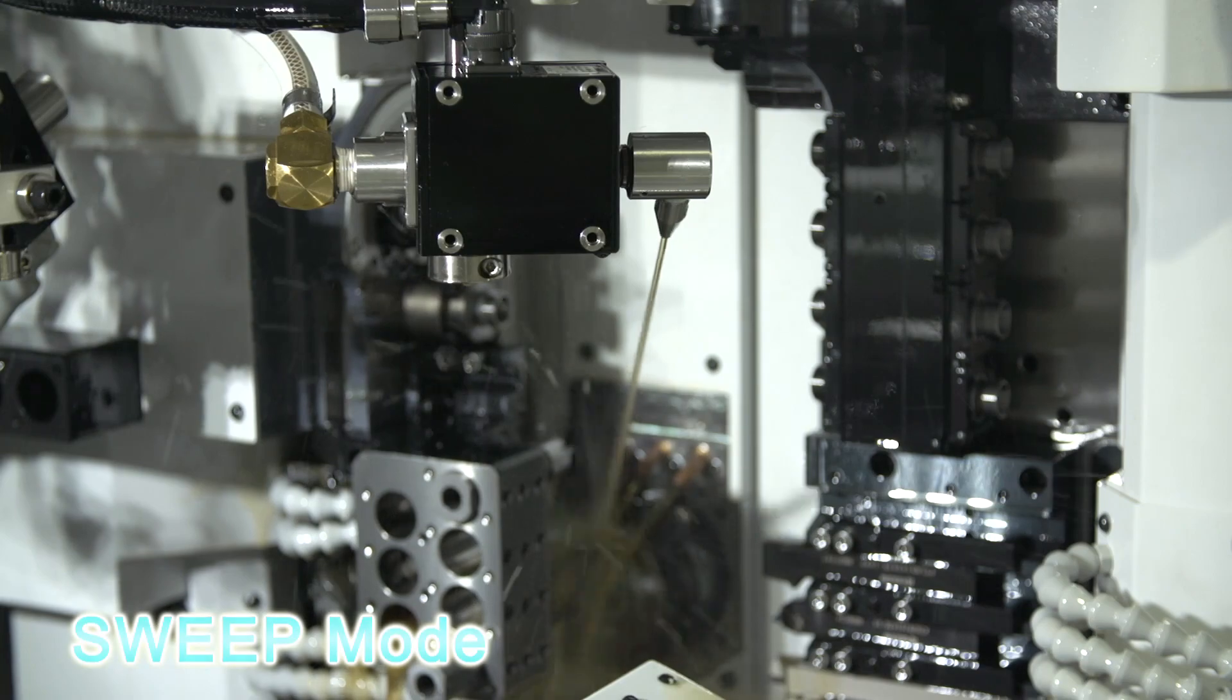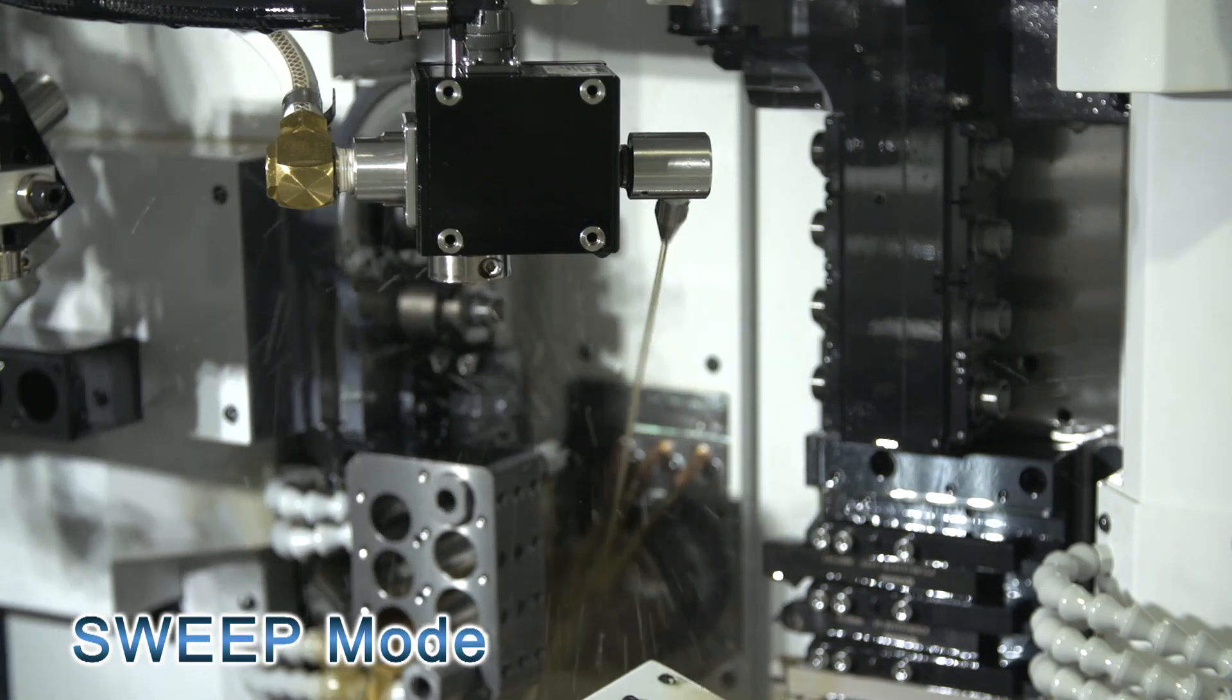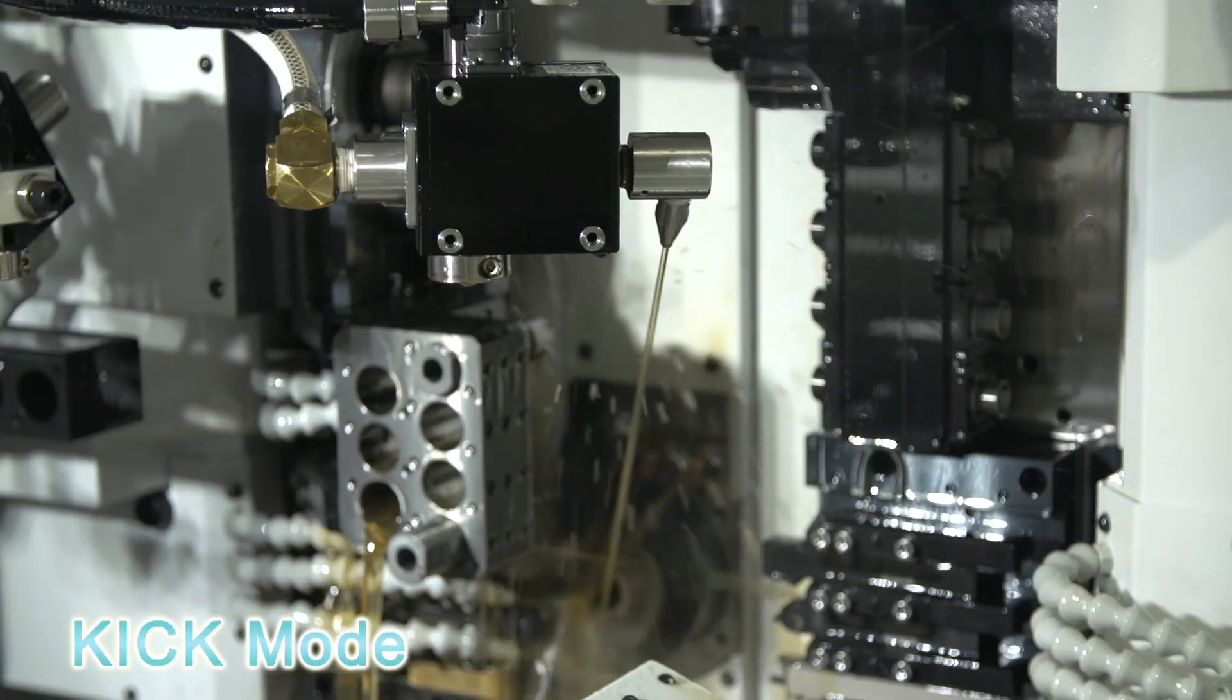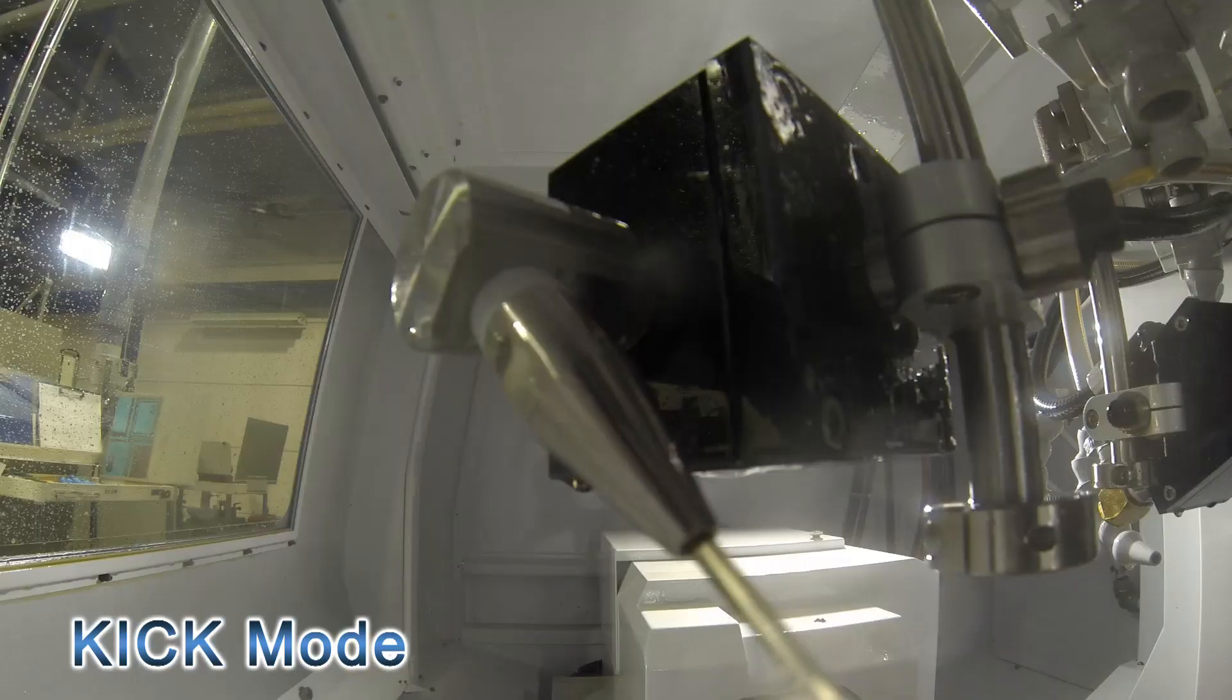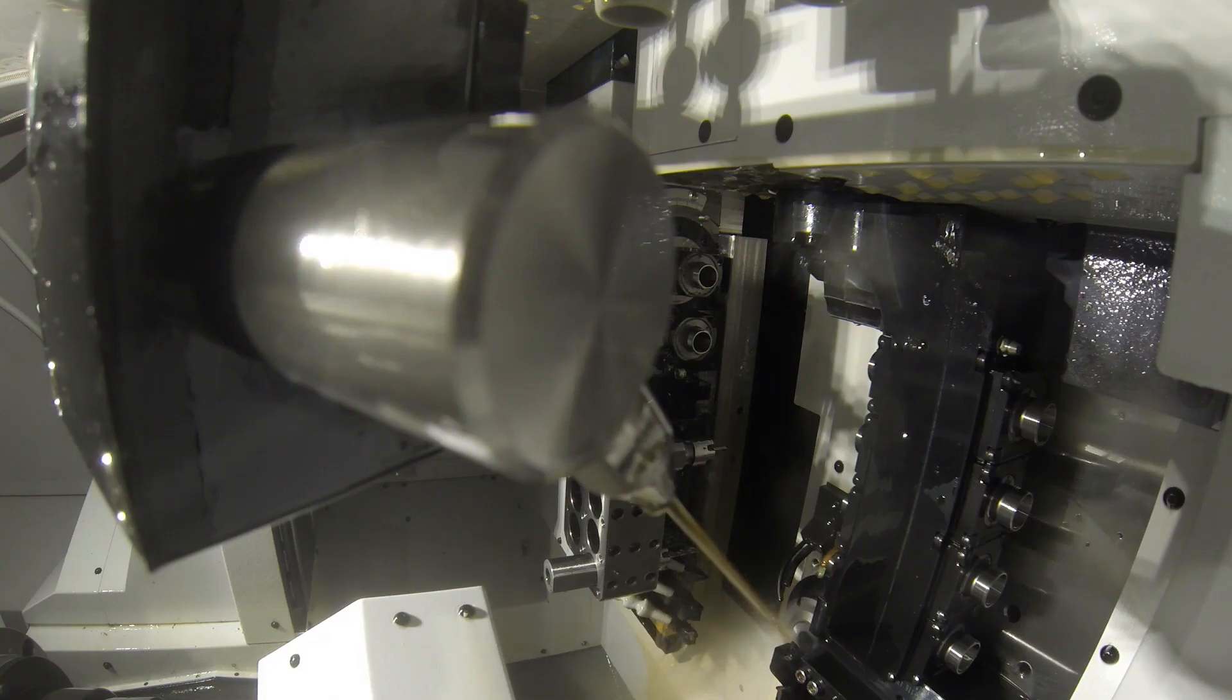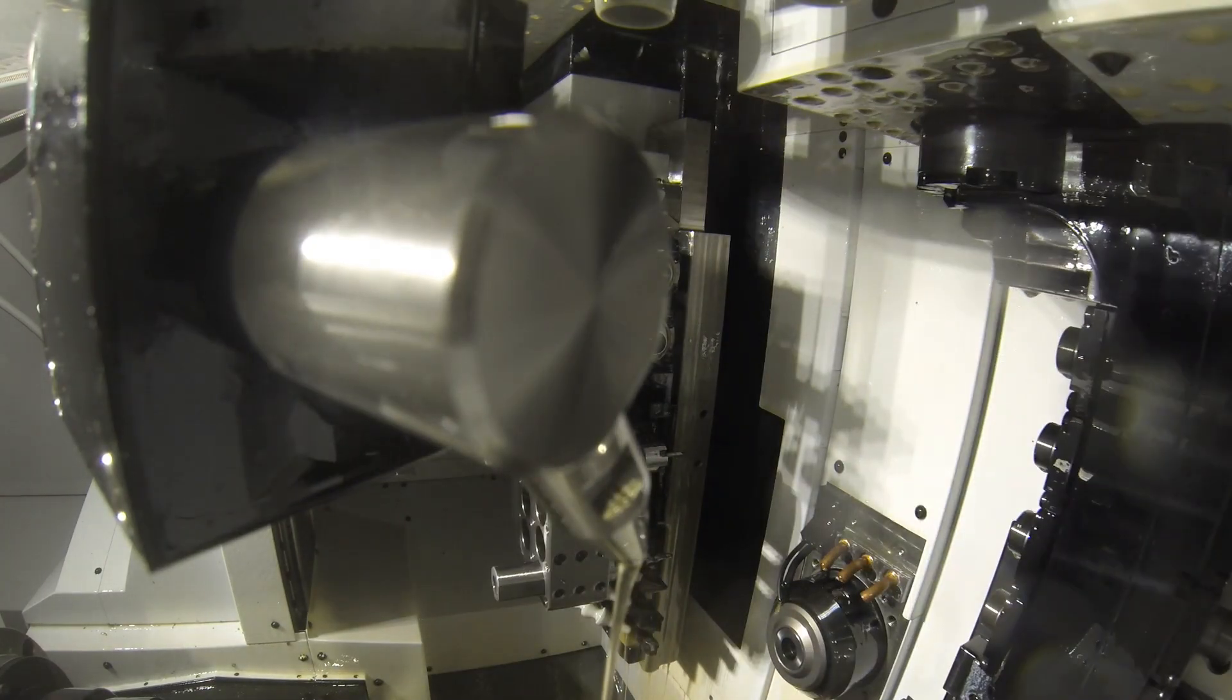In Sweep Mode, the nozzle is operated with a reciprocating motion in an arbitrary angle range at a constant speed. In Kick Mode, the nozzle is operated with a reciprocating motion in an arbitrary angle range with variable speed.